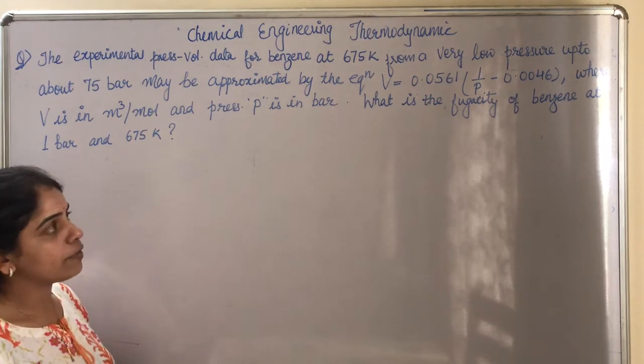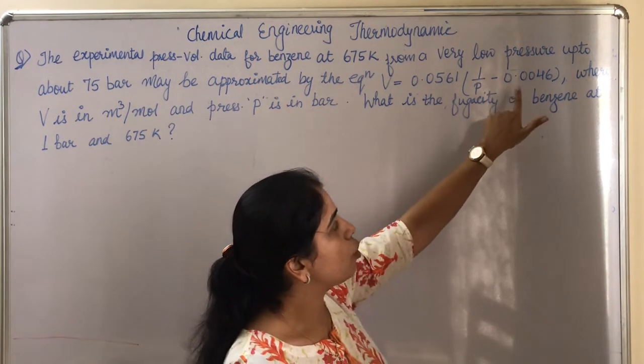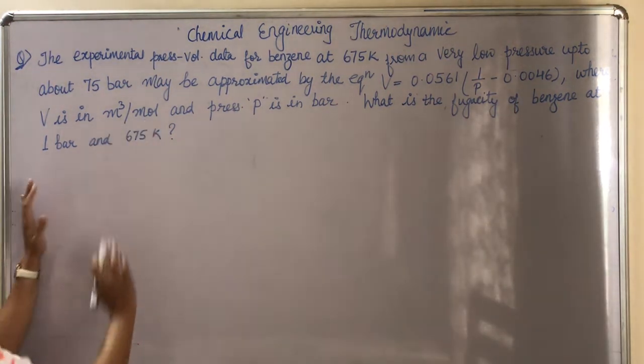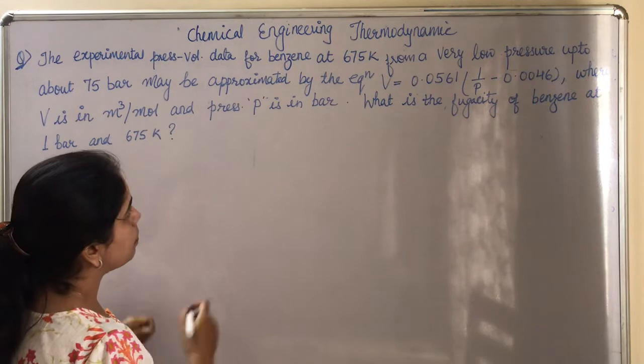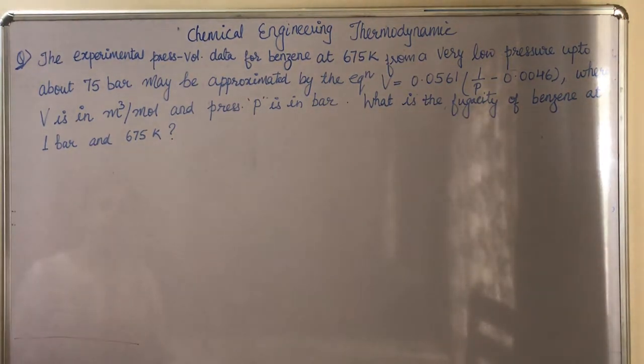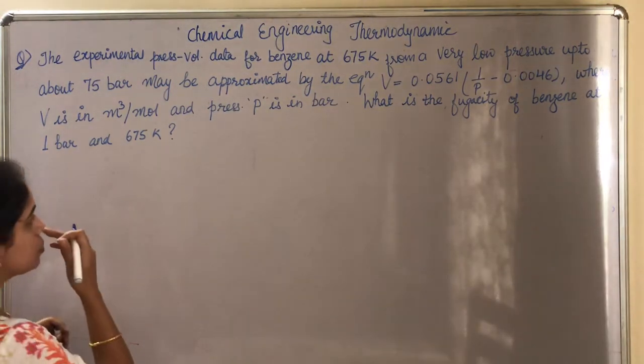The equation is V = 0.0561(1/P - 0.0046), where V is in m³/mol and pressure P is in bar. What is the fugacity of benzene at 1 bar and 675 Kelvin?